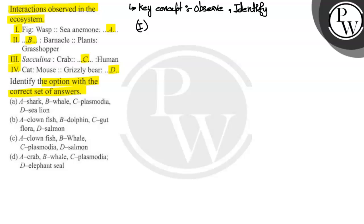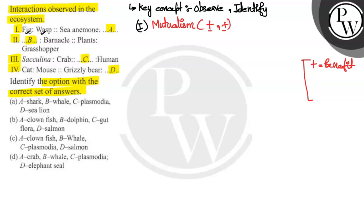First, what is given here? We have given fig and wasp. These three symbols are used here: if there is a benefit of any species, then we indicate it as a plus sign. If there is no effect, then we indicate it as a zero. If there is a loss, then we show it as a negative sign. These three symbols are used here.